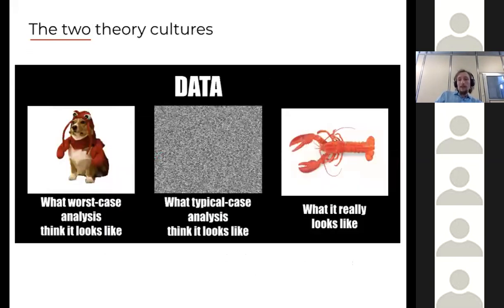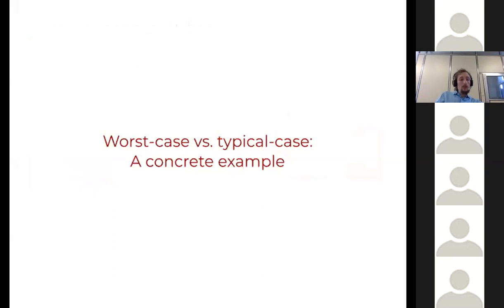When I talk about data there are basically two theory cultures. The first one being worst case analysis, which completely ignores the role of data. I'm thinking about VC type bounds. The other culture is typical case analysis, which you've also heard a lot throughout this week, which models data too simplistically, just thinking IID Gaussian noise. The question we'd like to ask is: can we do better than that?